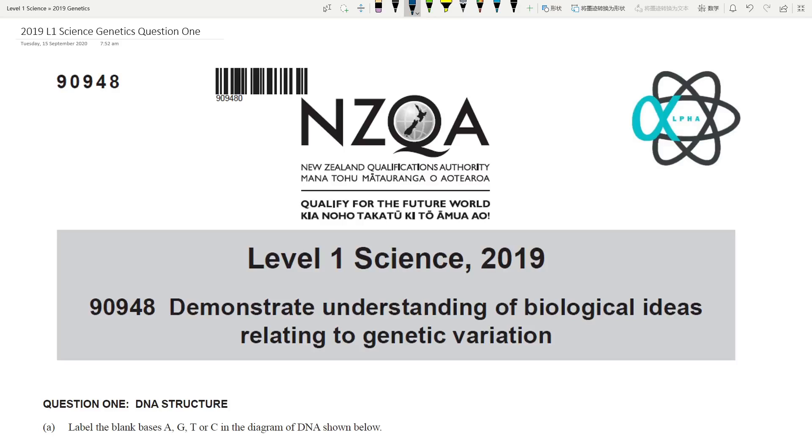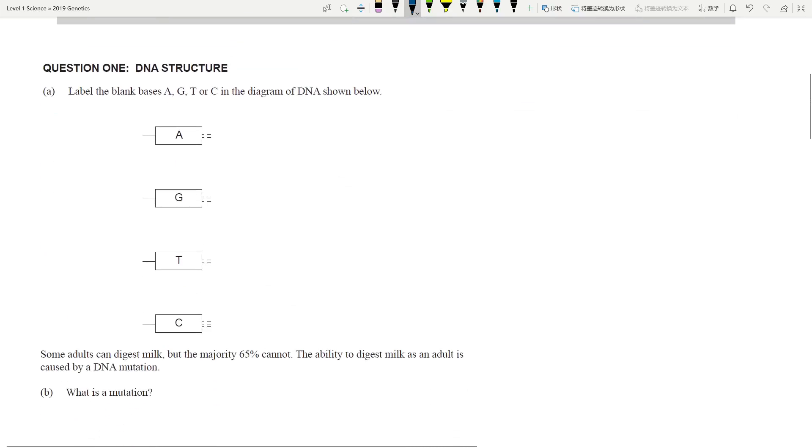Hello everyone, today we are going to look at some Level 1 Science, the 2019 Genetics Variation paper. As always, one question per video. Let's get into it. Question 1 of this particular examination paper is quite straightforward. I have to say this 2019 exam was very short and very easy as well, so hopefully if you are sitting the exam this year, the paper will be as easy as this one.